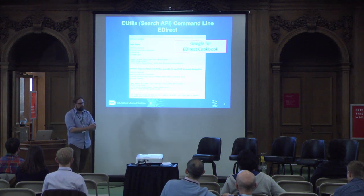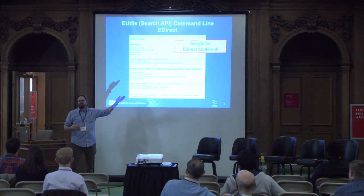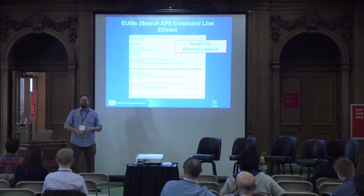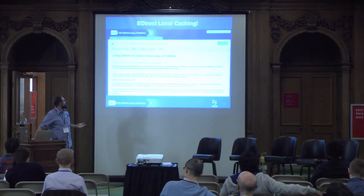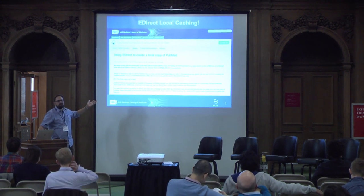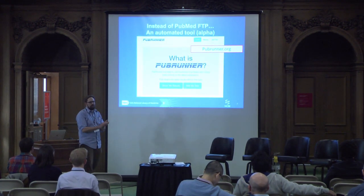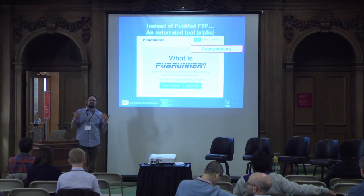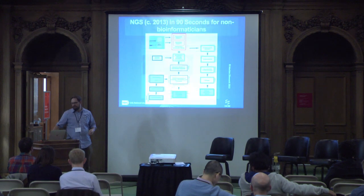If you're in the API world, we have an API called eutils. There's a command line implementation called eDirect, and you can Google for the eDirect cookbook — it's on GitHub. You can find large bulk things very quickly. You can actually locally cache your own version of PubMed or PMC, the open access subset. We've also built some prototypes for corpus updaters for the PMC subset if you're into natural language processing.